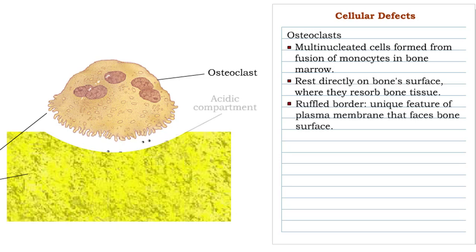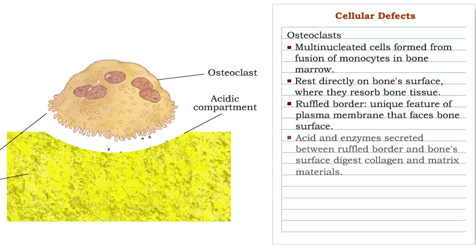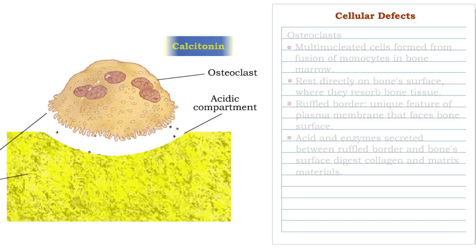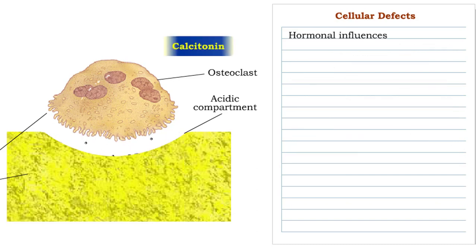Osteoblasts degrade bone matrix by secreting acid and enzymes between their ruffled borders and the bone surface. This natural breakdown of bone tissue releases calcium and other nutrients into the bloodstream. Hormones exert significant influence on resorption.